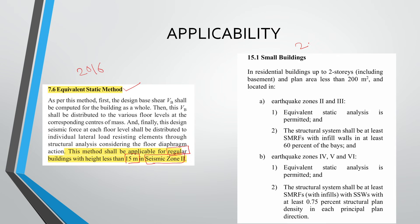But if you see for 2025, in residential buildings up to two storeys only, including the basement, and plan area less than 200 square meters, for this, equivalent static analysis is permitted. So it is for zone 2 and zone 3.